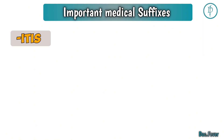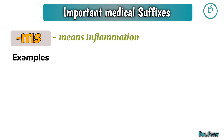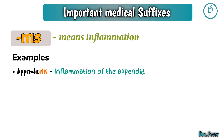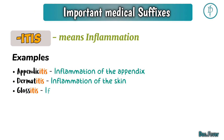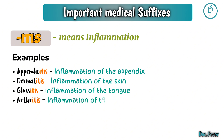Itis is a suffix which means inflammation. Where you will see the itis at the end of the word, it means inflammation of that structure. For example, appendicitis — inflammation of the appendix; dermatitis — inflammation of the skin; glossitis — inflammation of the tongue; arthritis — inflammation of the joints.